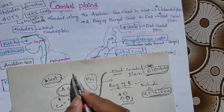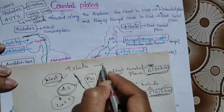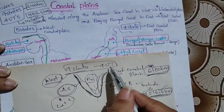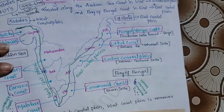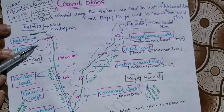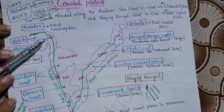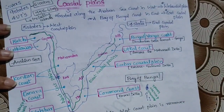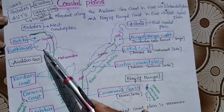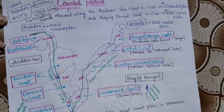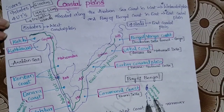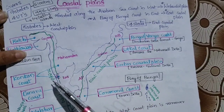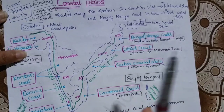The coastal plains cover a total of nine states and four union territories. On the west side we have five states: Gujarat, Maharashtra, Goa, Karnataka, and Kerala. On the east side we have four states: Tamil Nadu, Andhra Pradesh, Odisha, and West Bengal. These are the nine states and four union territories covered.